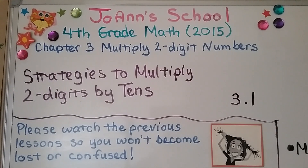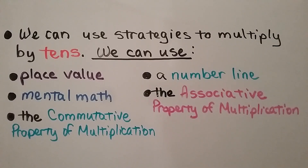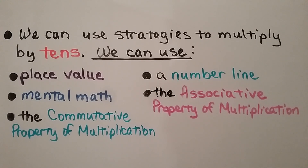We're in a new chapter, chapter 3, all about how to multiply two-digit numbers. We're at lesson 3.1 and these are strategies to multiply two digits by tens. We can use strategies to multiply by tens: place value, mental math, the commutative property of multiplication, a number line, or the associative property of multiplication.